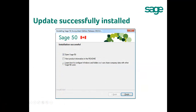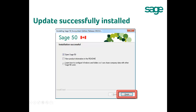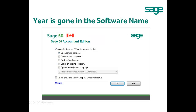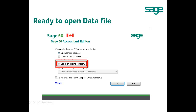Once the update is successfully installed, you will be given three options. Depending on what you would like to do, you can have all three boxes checked, or you can put a checkmark beside 'Open Sage 50 Only' and hit Finish. After you hit Finish, Sage 50 2015 opens. You are now ready to open your data again and start converting it to the latest edition.